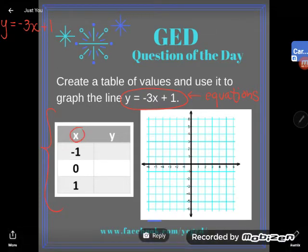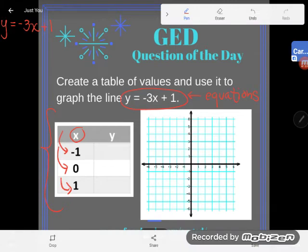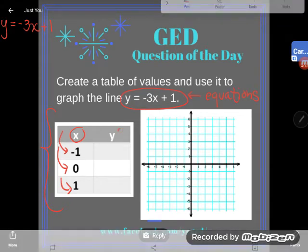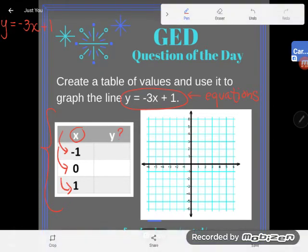Because look what this table of values consists of, a bunch of X's. Those are all X's, which means each or any one of those could be plugged in for X so we could see what happens to Y. Let's give it a try.